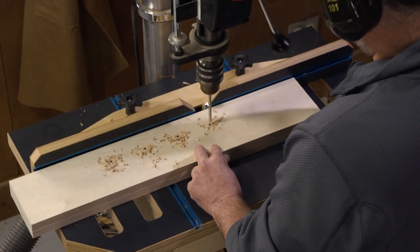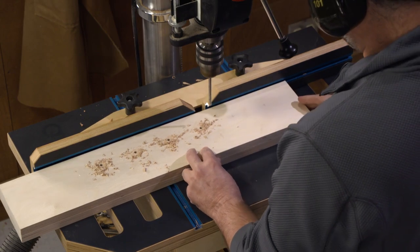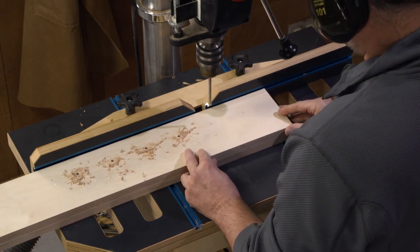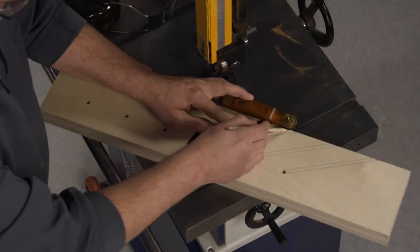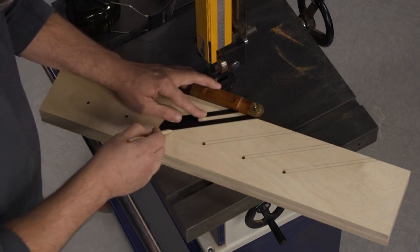Then I went over to the drill press and drilled a series of holes which will be the ends of the slots. After that was done, I could use my bevel gauge to mark the sides of the slots.